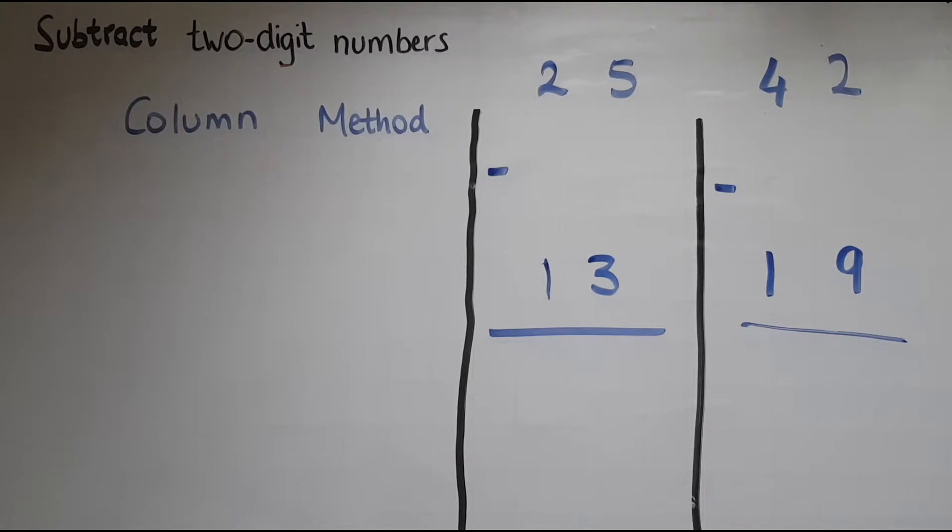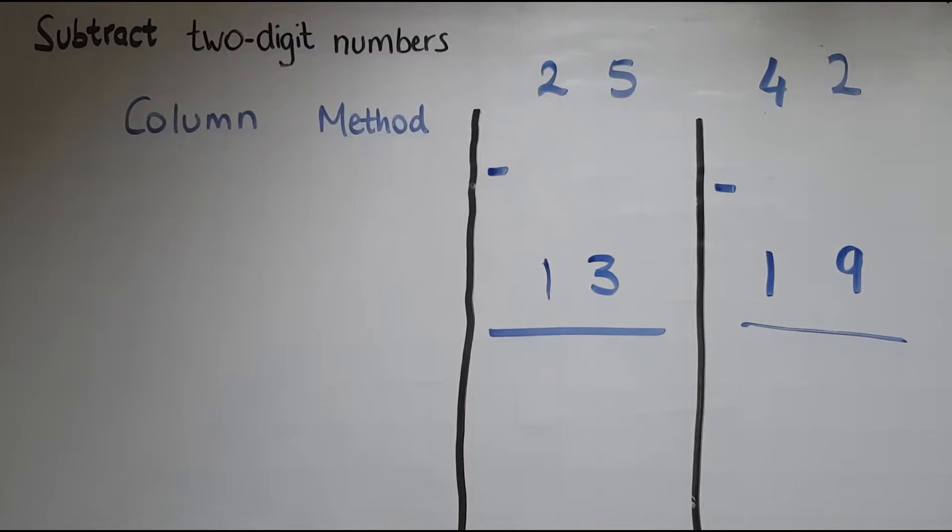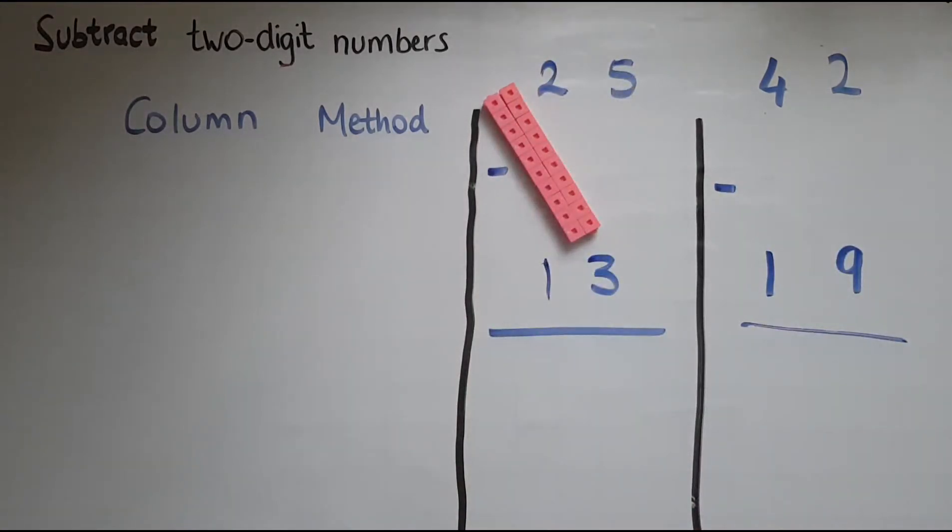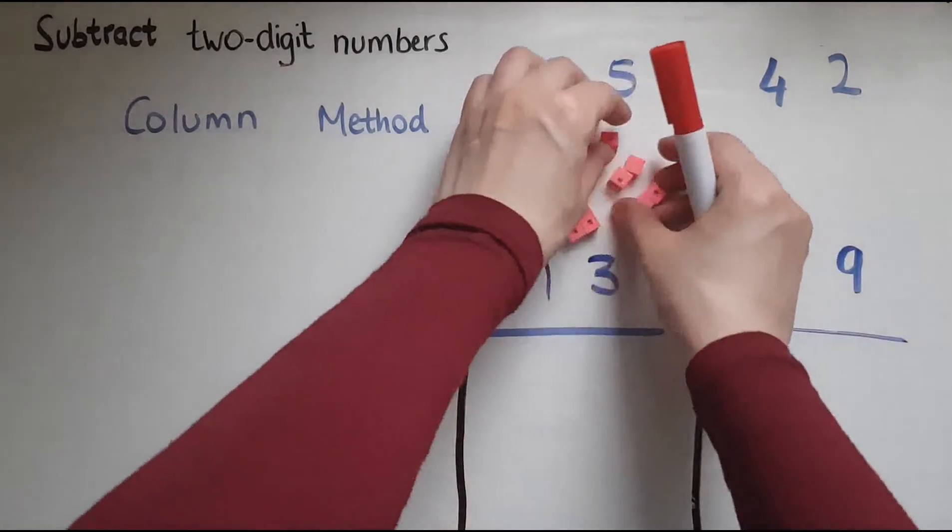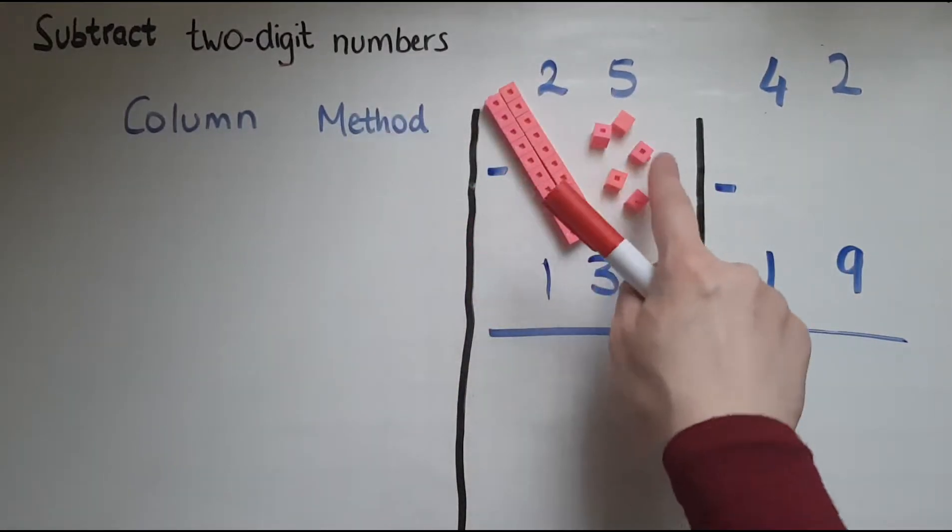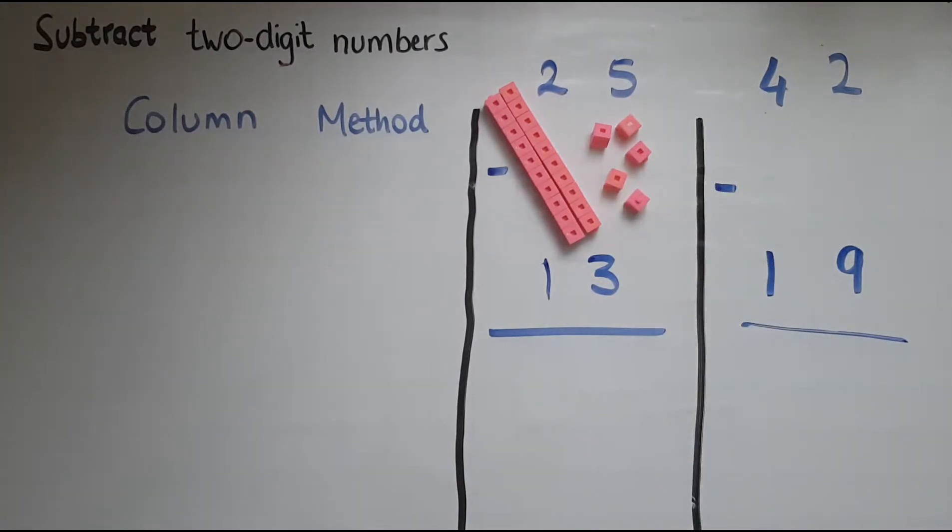I will use three methods to explain subtraction. One of them is the column method. I'll start off with that. So I've got two examples: 25 take away 13 is the first one. So I'll start by representing 25 using cubes. So I've got two lots of 10 and there are five single cubes in there.